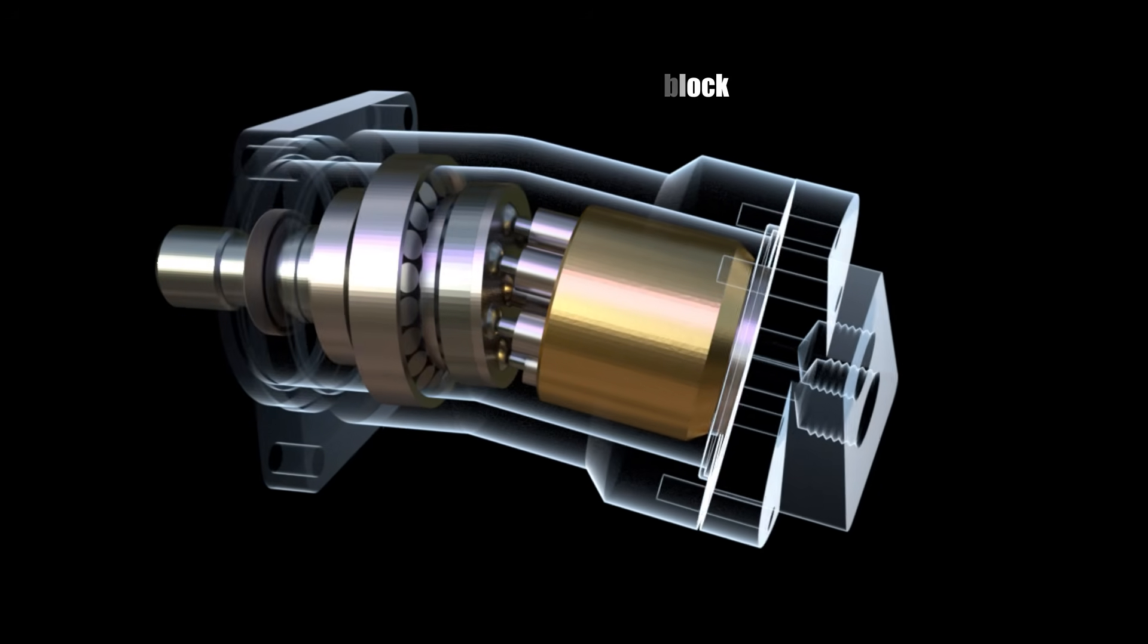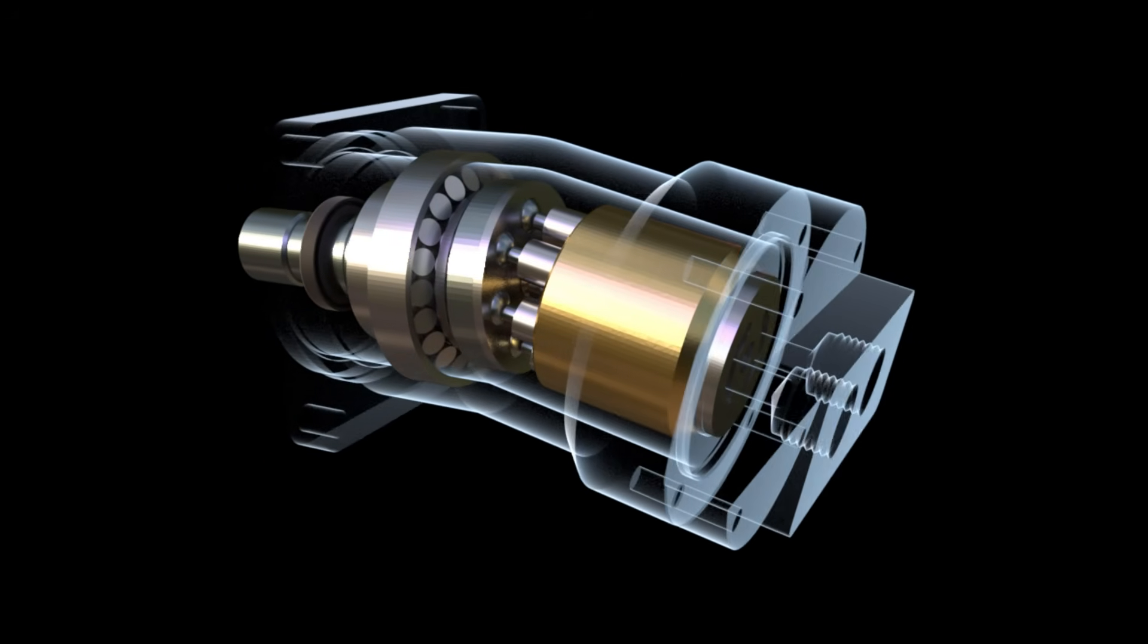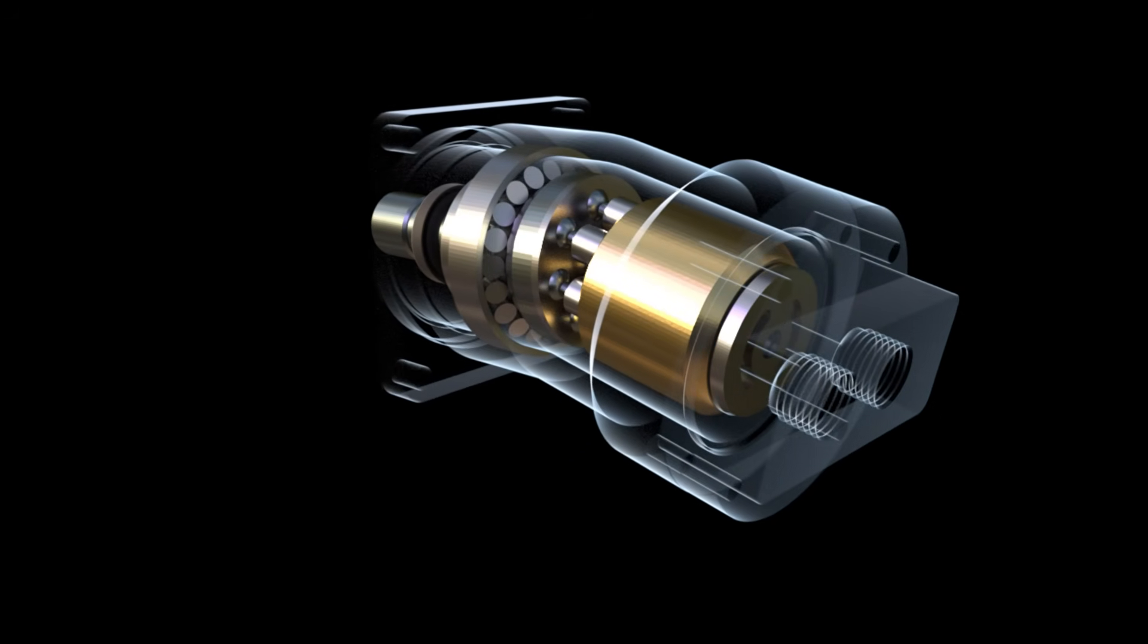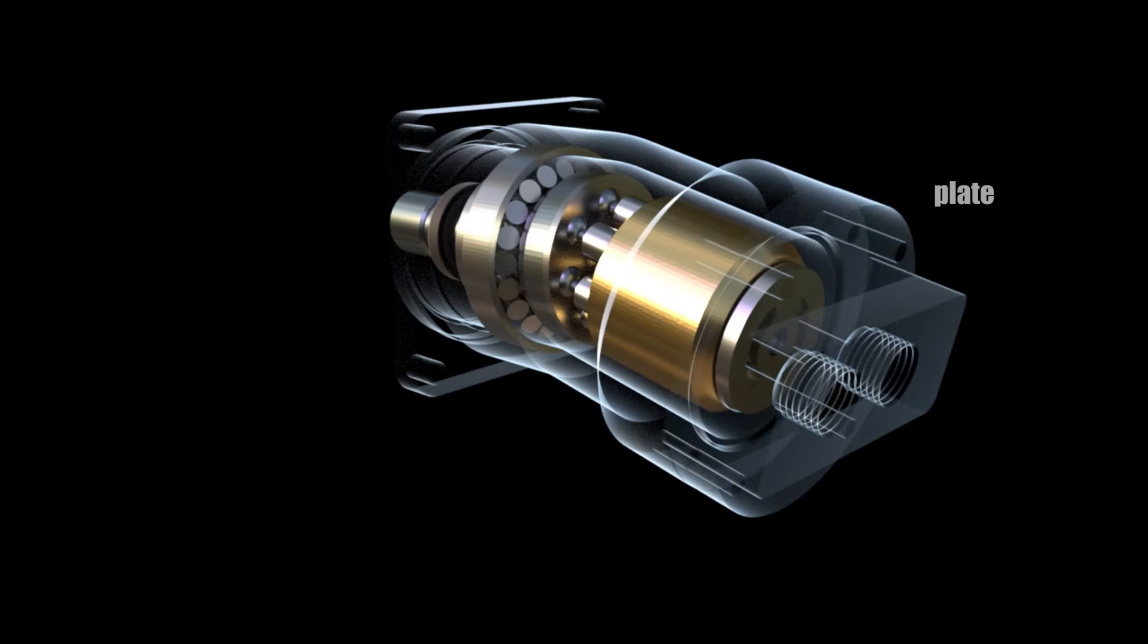The block is supported by a valve plate that has a spherical surface. The plate has channels for supplying and discharging fluid to and from the pistons. The fluid leaves the valve plate and then enters the cover that has an inlet and outlet opening.